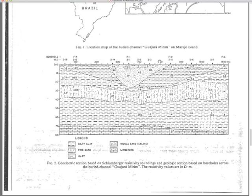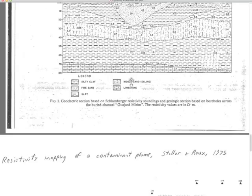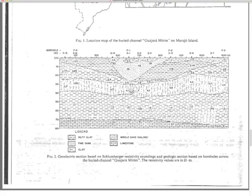Knowing the aquifer's volume and limited extent, you can calculate how quickly it recharges each year and decide how much to pump before triggering seawater intrusion from the island's edge. This is extremely valuable — it provides the data needed for a complete business plan. This is a typical tropical situation involving seawater intrusion versus fresh rainwater recharge, and resistivity surveys efficiently define the productive aquifer boundaries.